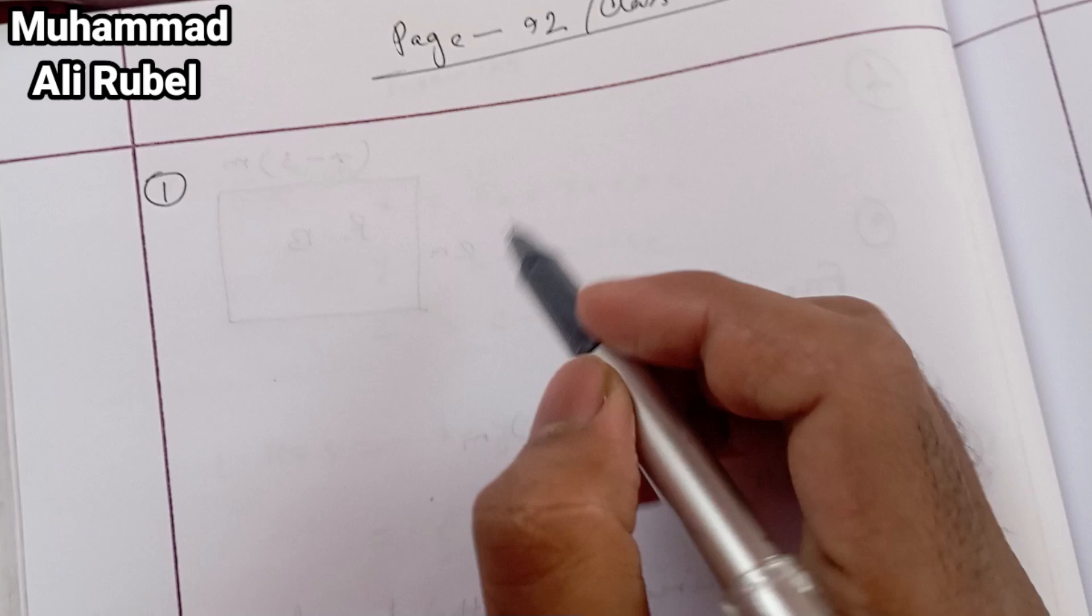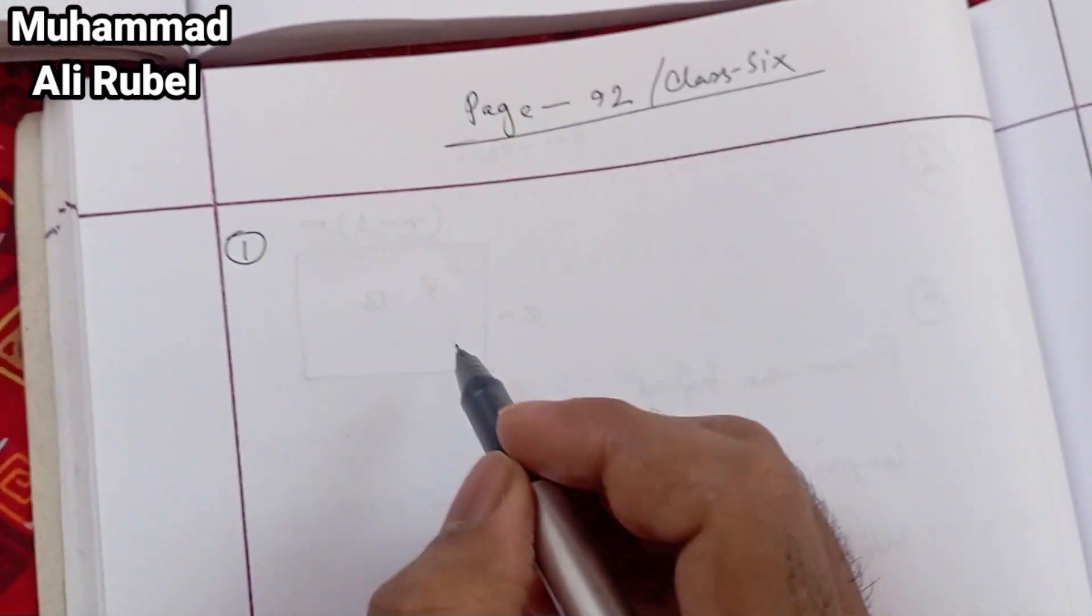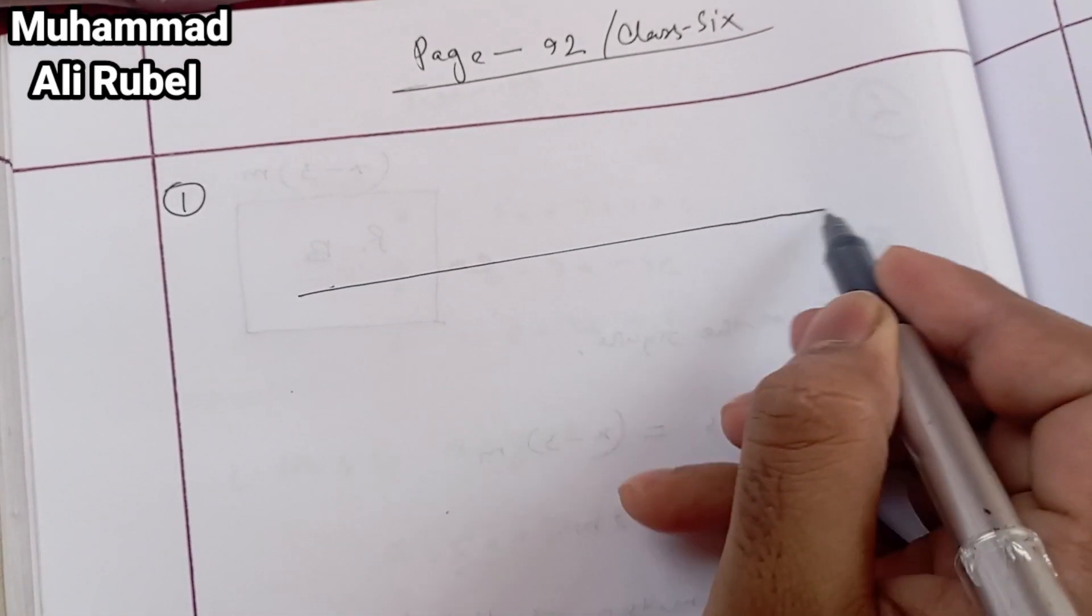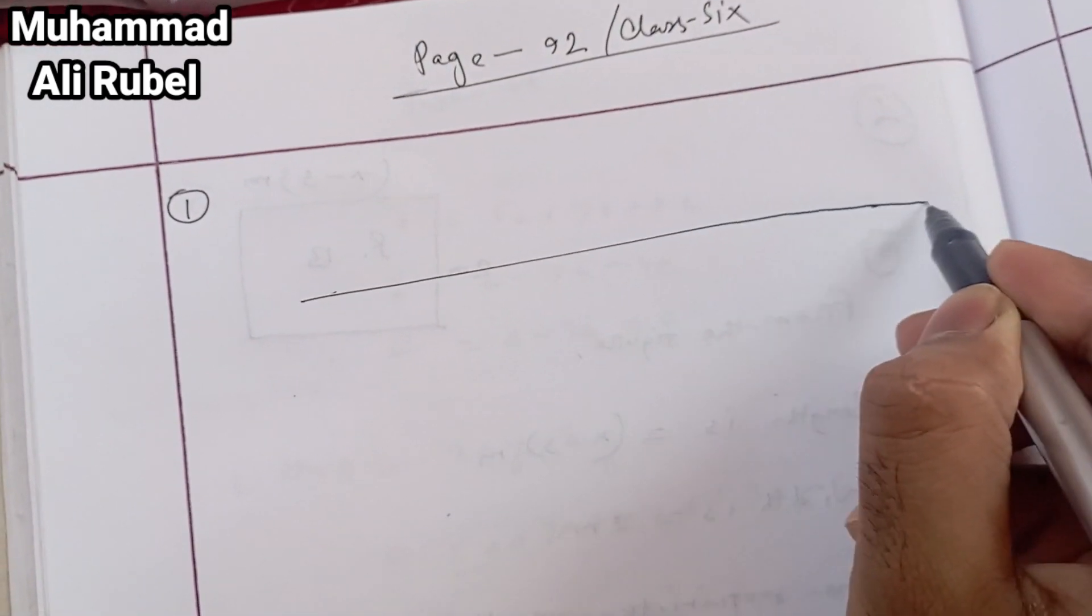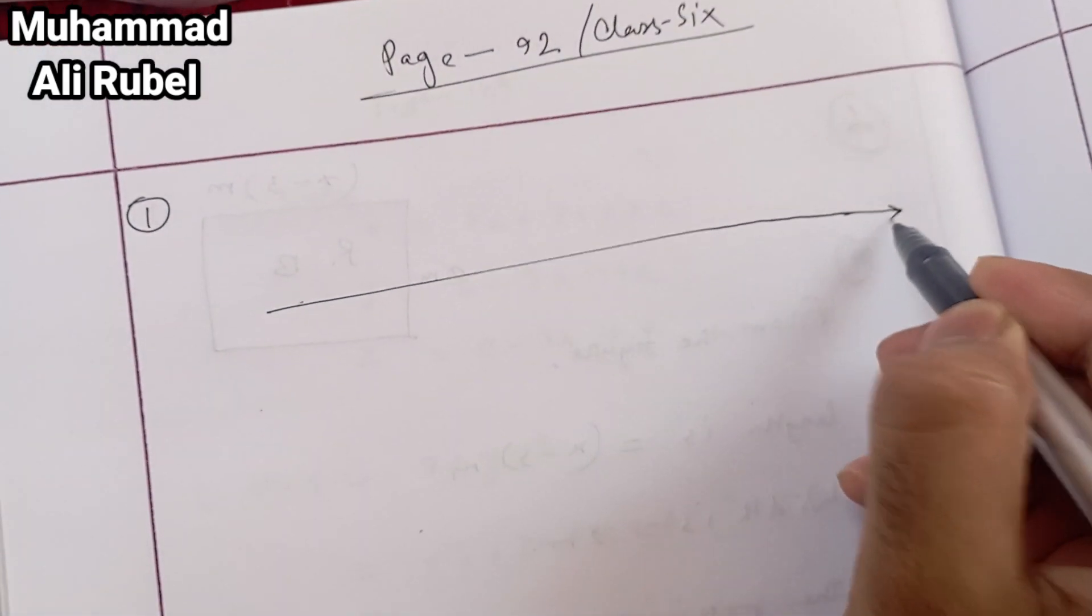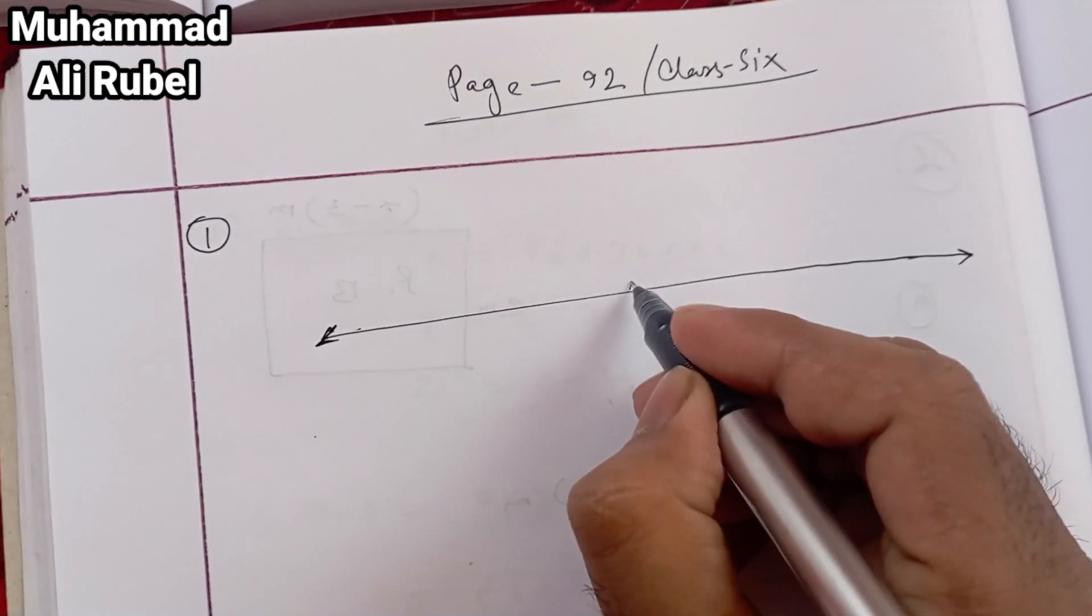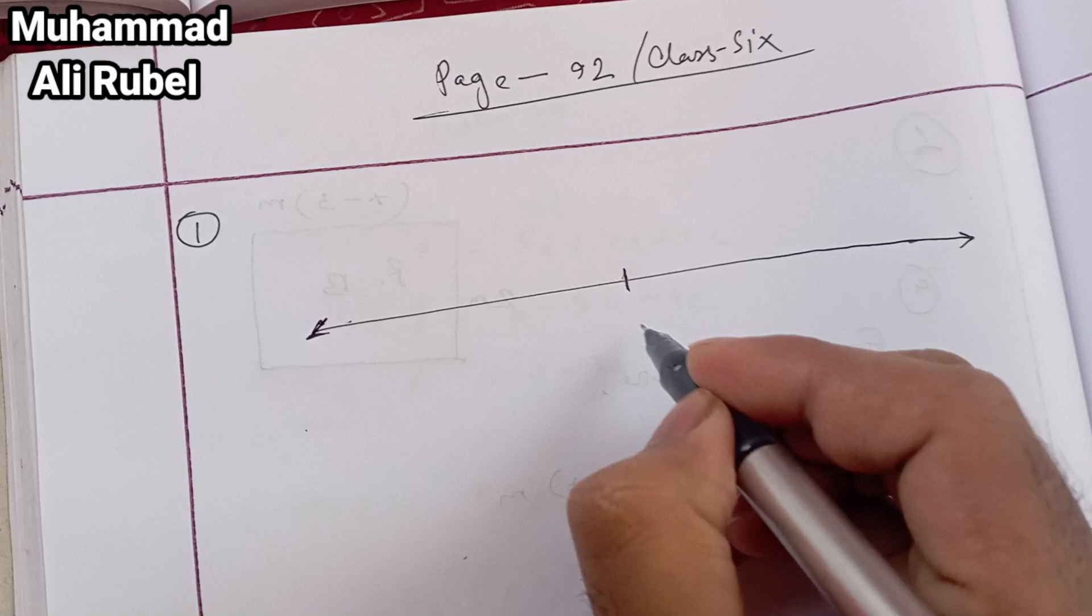So I'm going to show you, this is the number line.